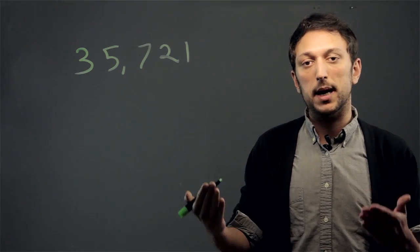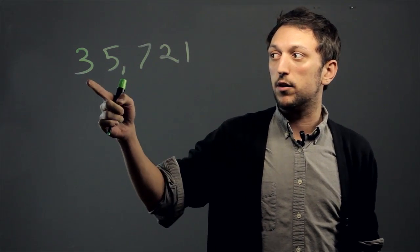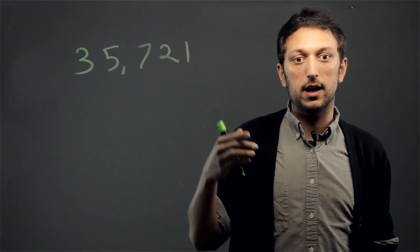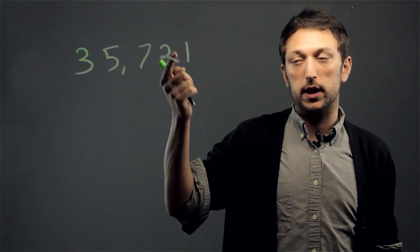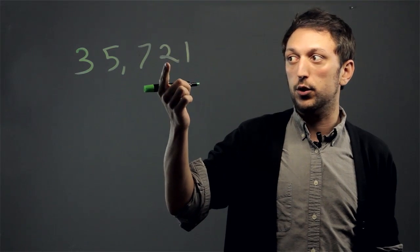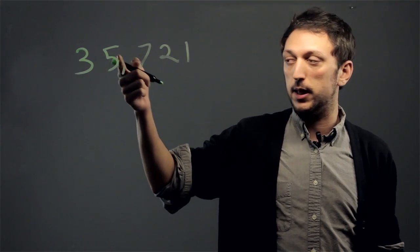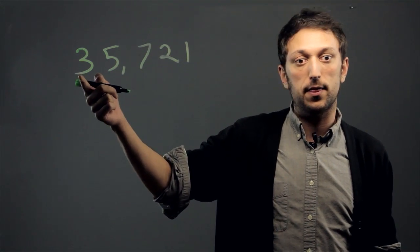Now, if you want to write it in expanded form, what you're saying is you're going to separate each digit into its place. Meaning, the one is in the ones place or units place, two is in the tens place, hundreds place, thousands place, and ten thousands place.